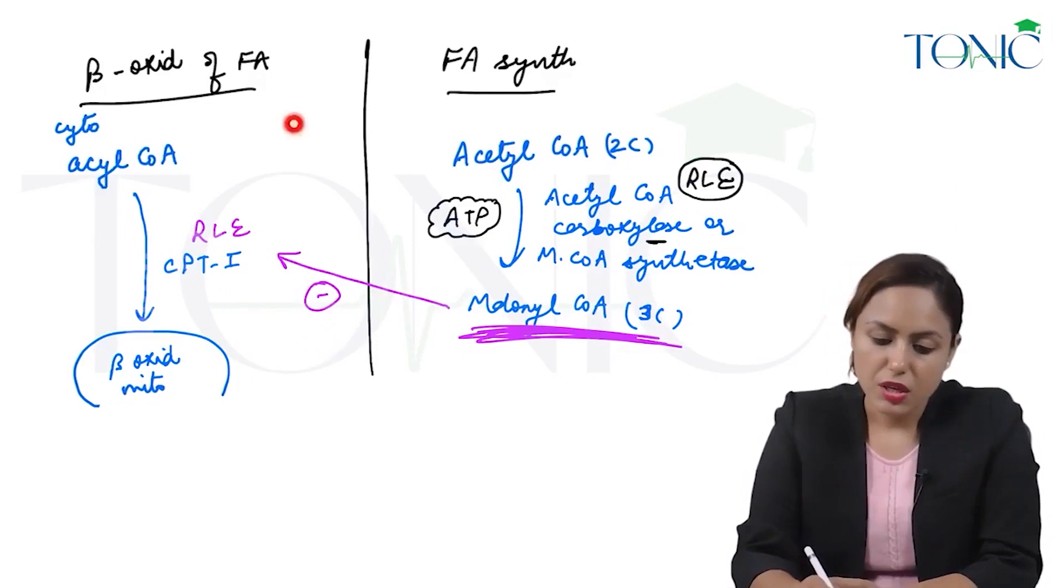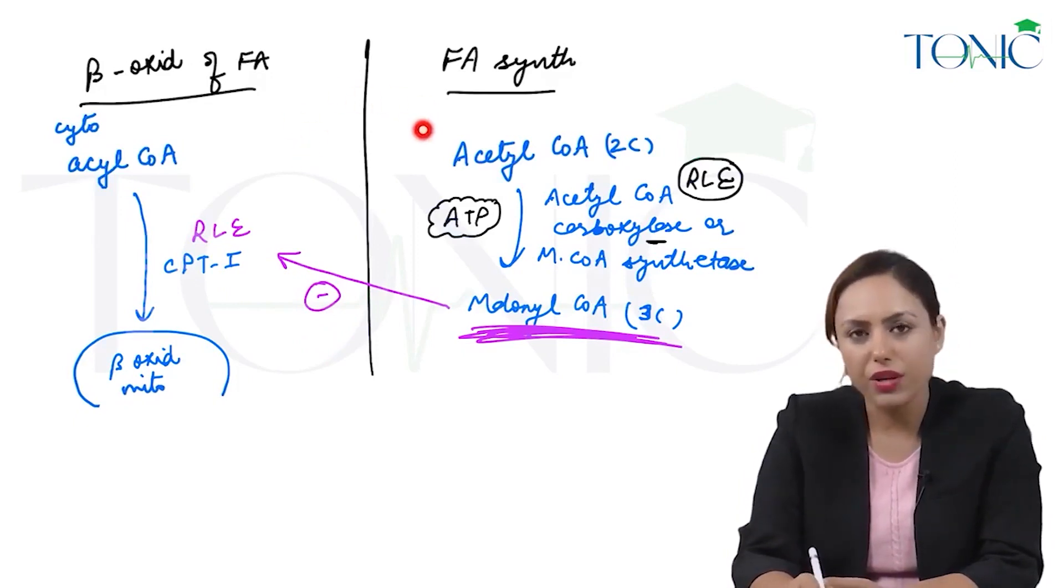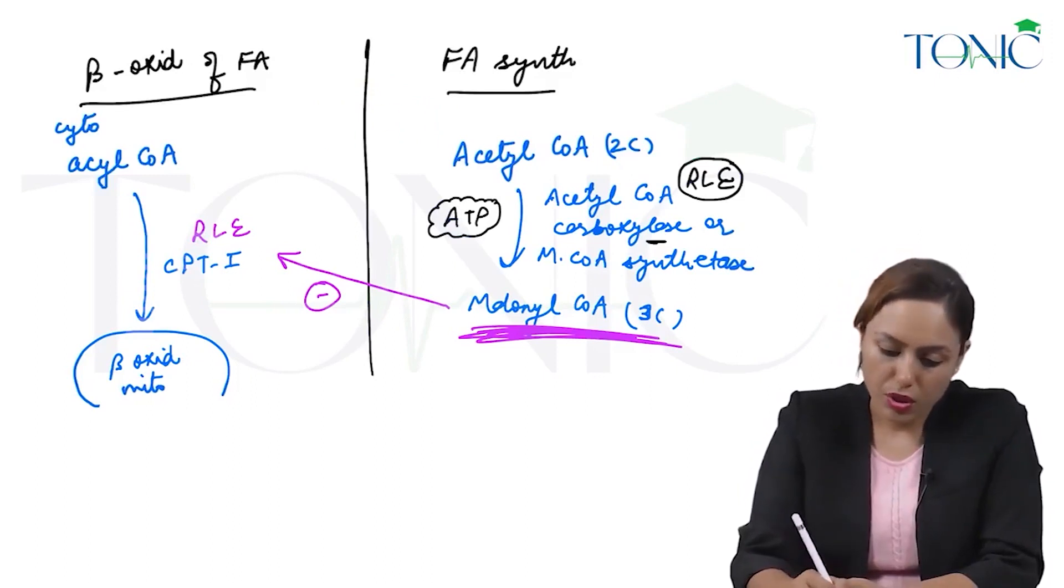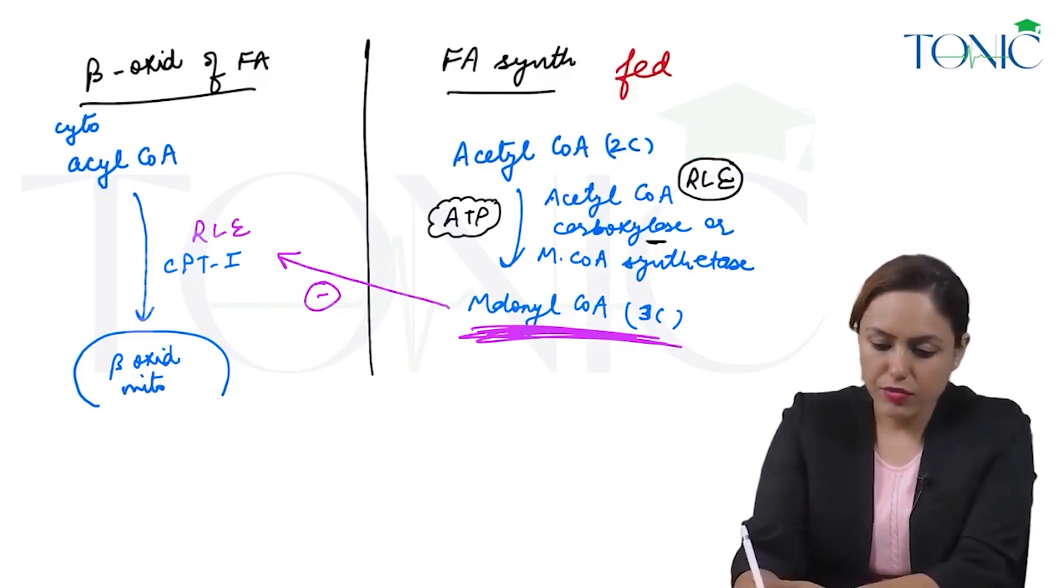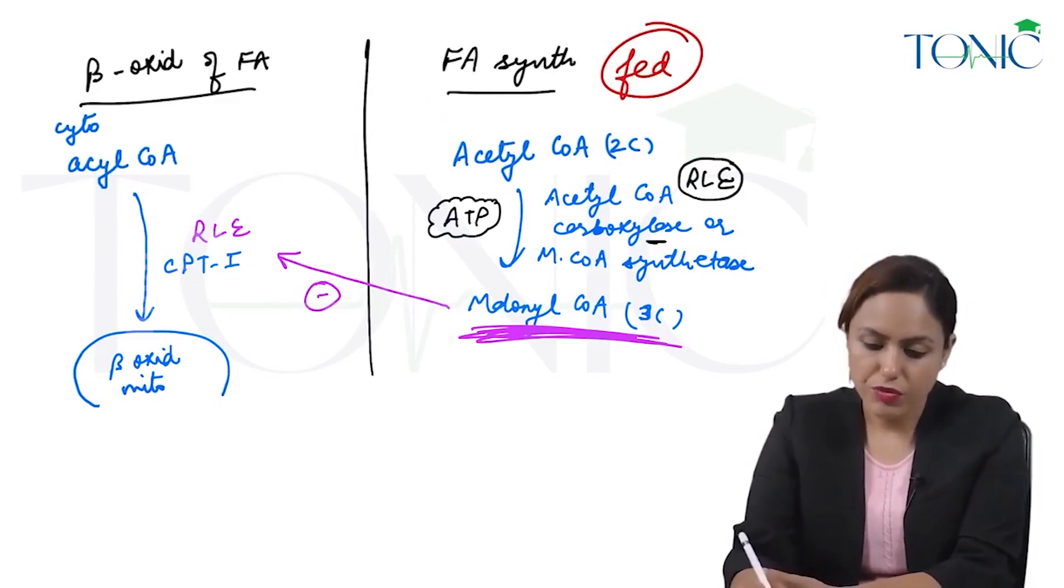Reciprocal regulation means out of these two opposite pathways, only one will be activated at one time. So let's say there is a fed state in the body—in fed state, fatty acid synthesis will occur.